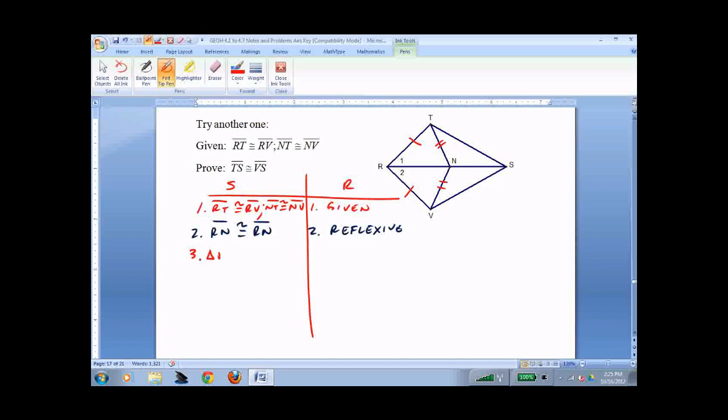Triangle RTN congruent to triangle RVN, side side side. Now I have a problem. I haven't really figured this out yet. I'm looking over TS and VS. That's TS and VS.